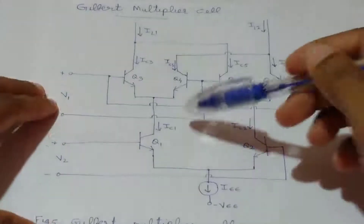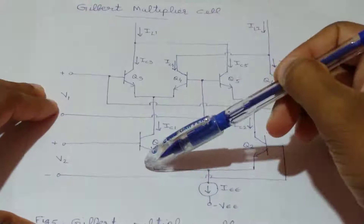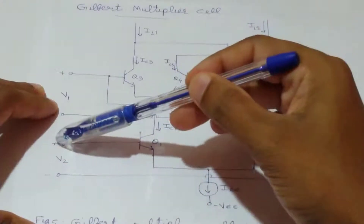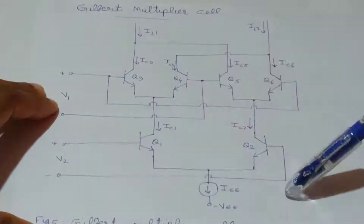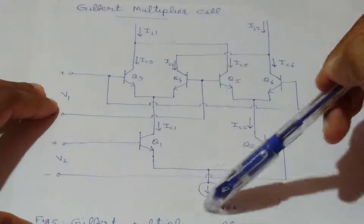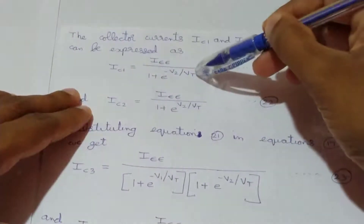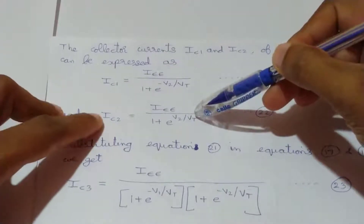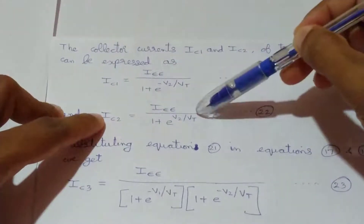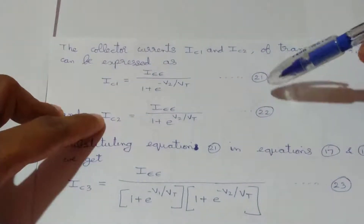Now consider the third emitter coupled transistor pair. The differential input is V2, with the positive terminal connected to the base of Q1 and the negative terminal to the base of Q2. The bias current is IEE. Hence IC1 equals IEE divided by (1 + e raised to minus V2 over Vt), and IC2 equals IEE divided by (1 + e raised to V2 over Vt). These are equations 21 and 22.